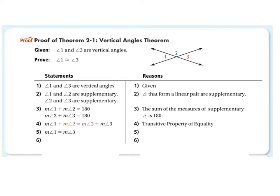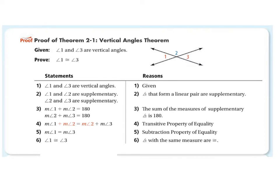By subtracting the measure of angle two from both sides, we get that the measure of angle one equals the measure of angle three — that's the subtraction property of equality. We subtracted the measure of angle two from both sides. If the measure of angle one equals the measure of angle three, then angle one is congruent to angle three, because angles of the same measure are congruent. That completes the proof of the Vertical Angles Theorem.